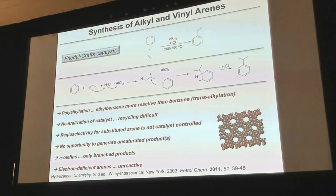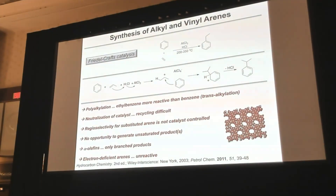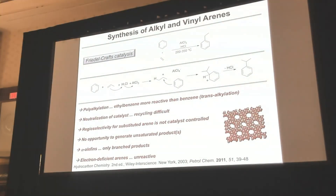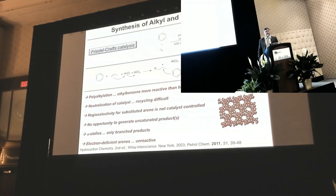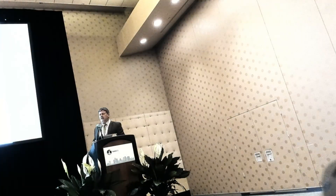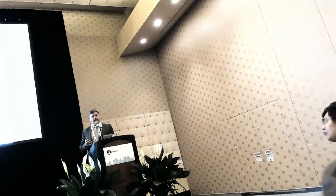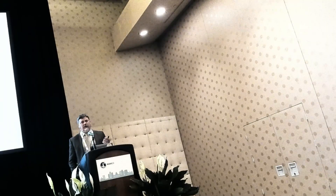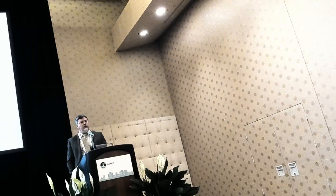Let's start to talk about how alkyl arenes are currently made. The vast majority of commercial routes are acid-catalyzed routes. Originally, alkyl arenes were made with one of the oldest catalytic reactions, a Friedel-Crafts reaction, where the combination of Lewis acid and Brønsted acid is used to activate electrophilic aromatic substitution. Predominantly in the 80s, zeolites became prominent — acidic zeolites. They have some substantial benefits compared to the traditional Friedel-Crafts reaction, including longevity and catalyst recycling. These are really useful commercial catalysts.